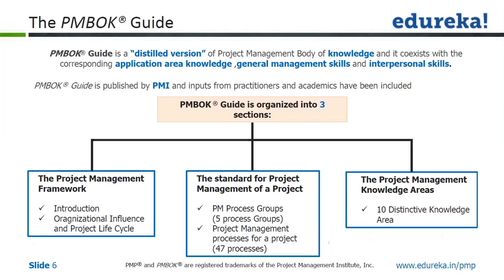The PMBOK Guide is essentially organized into three sections. The first is the project management framework, which includes the introduction and project life cycle and organizational influence chapters. The second is the standard for project management of a project, which includes five process groups: initiation, planning, execution, monitoring and control, and closing.